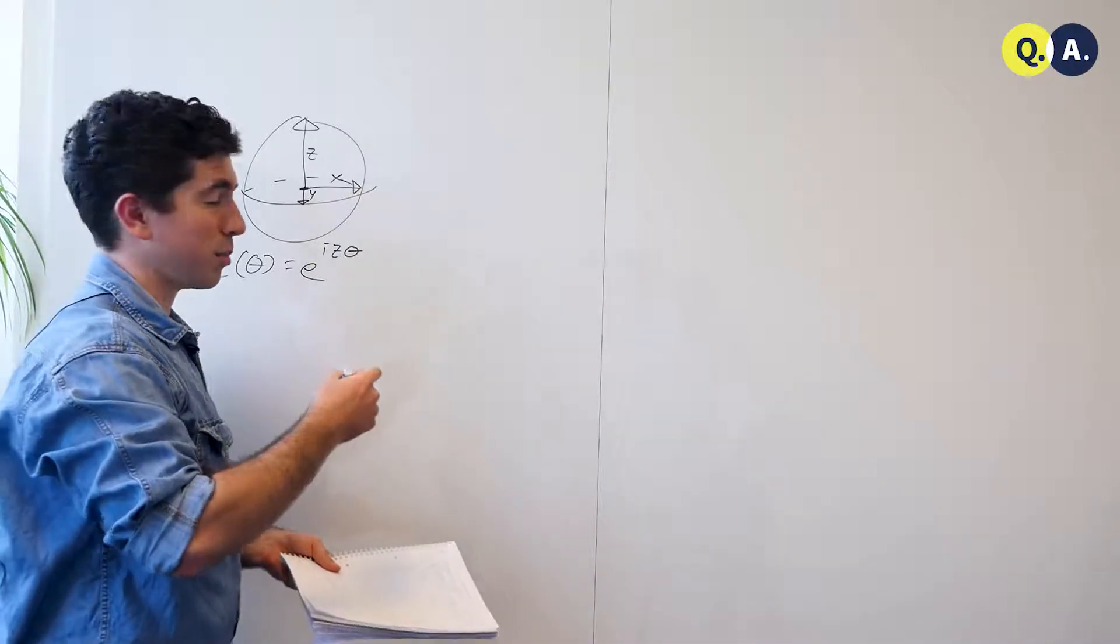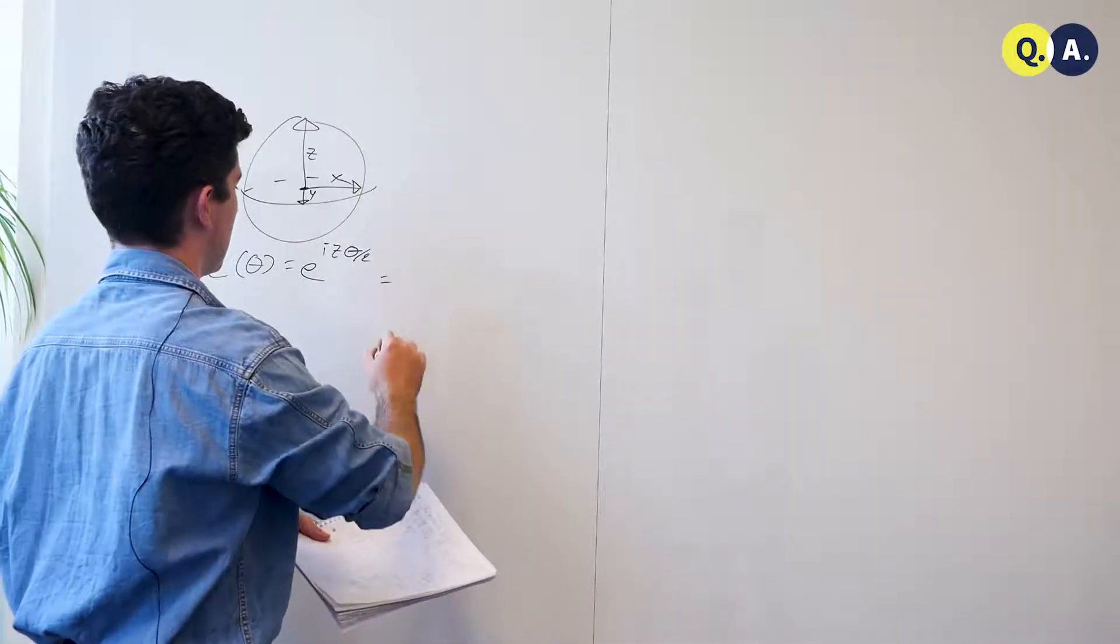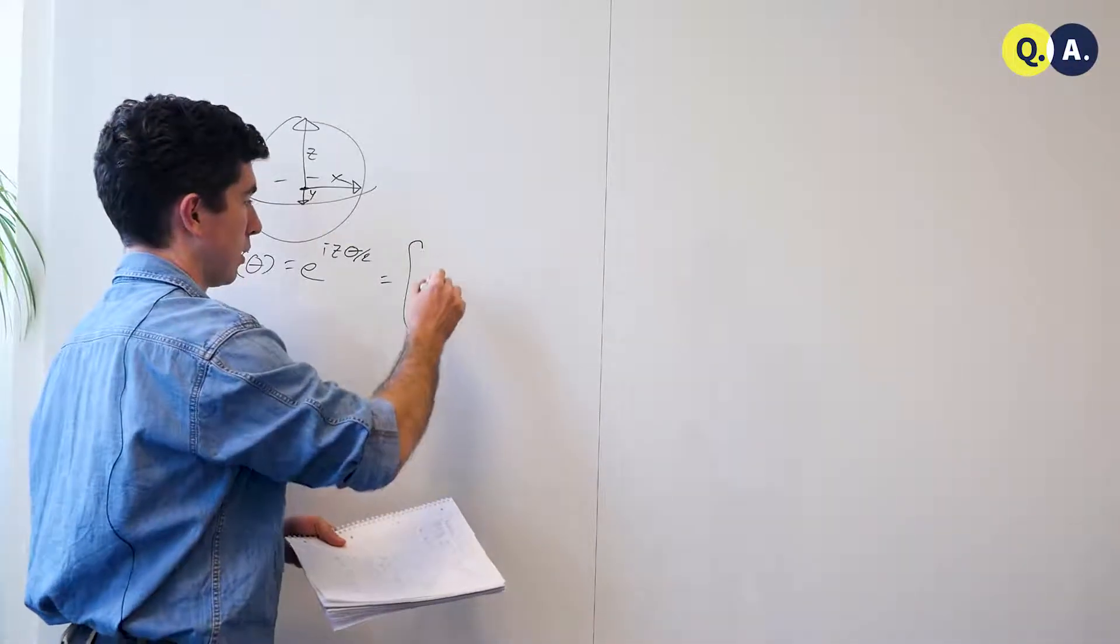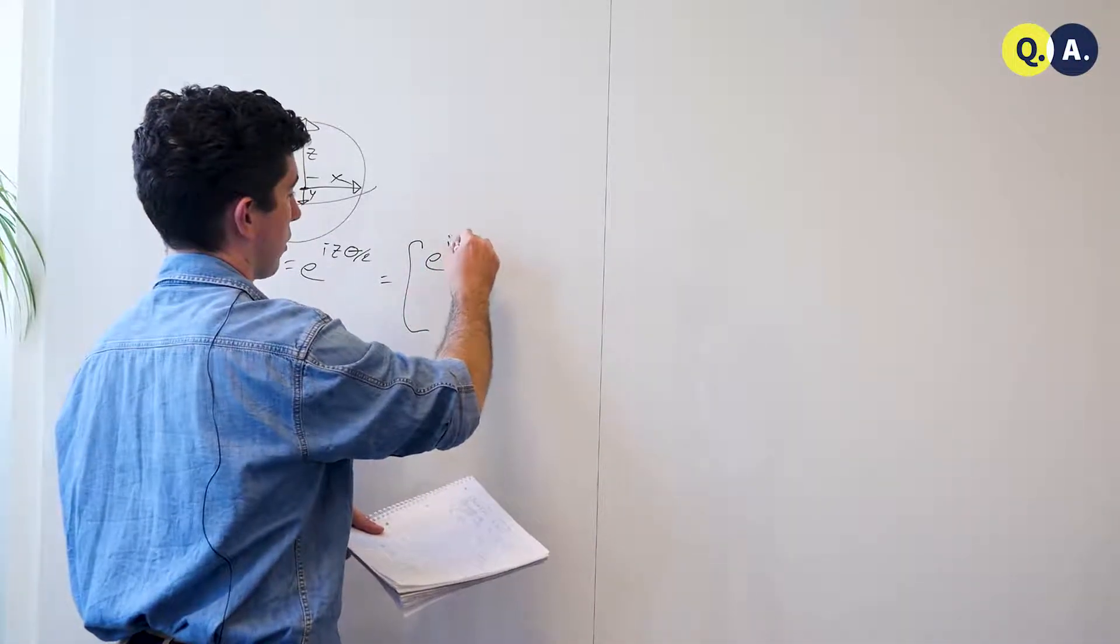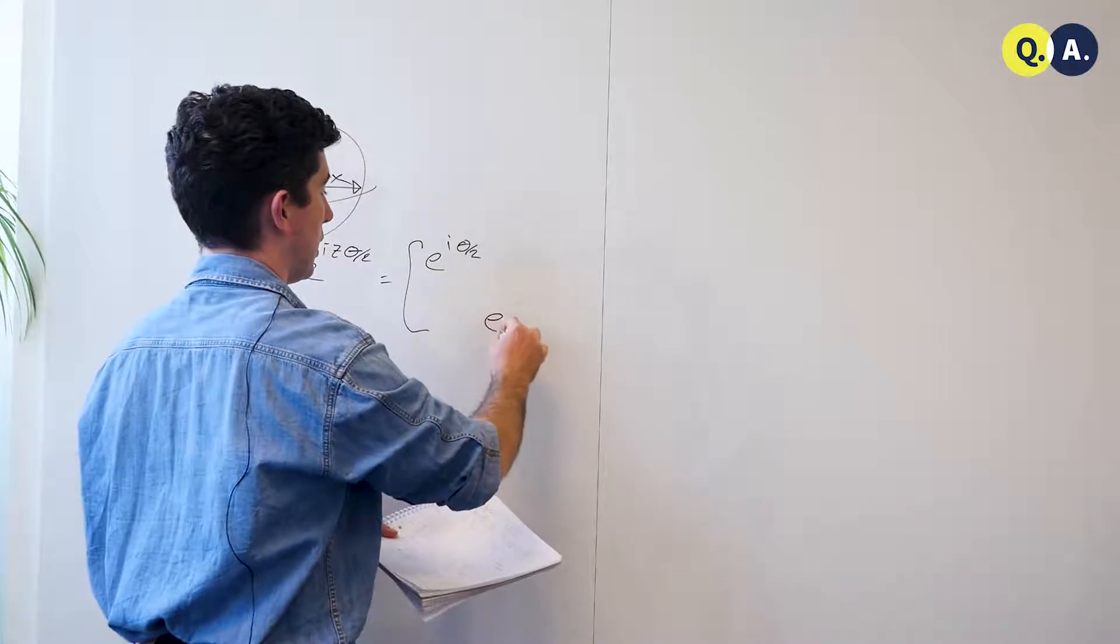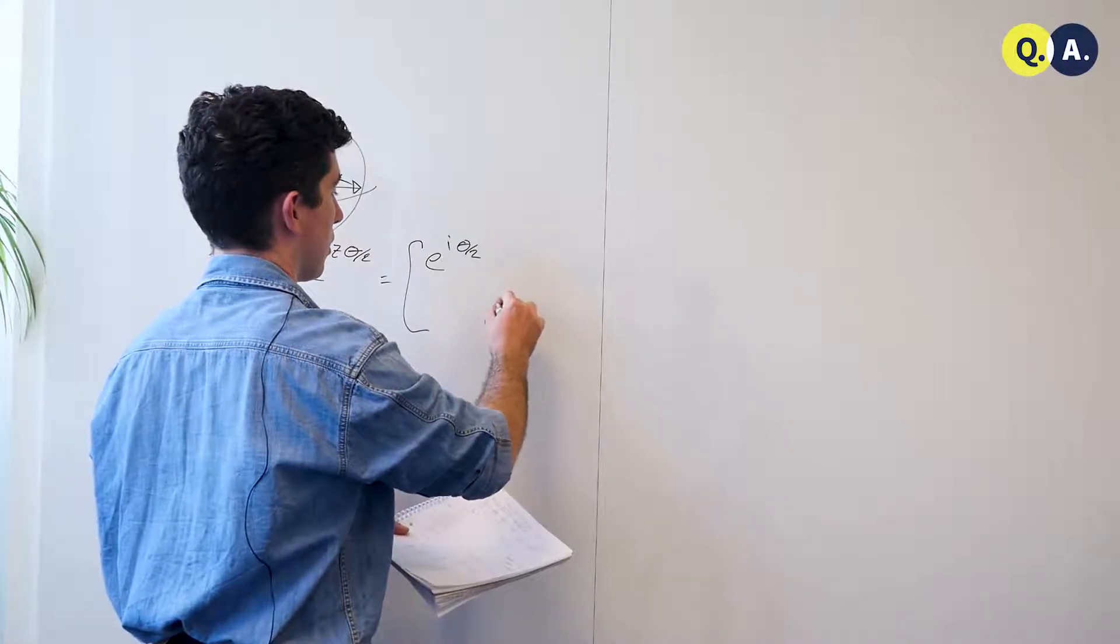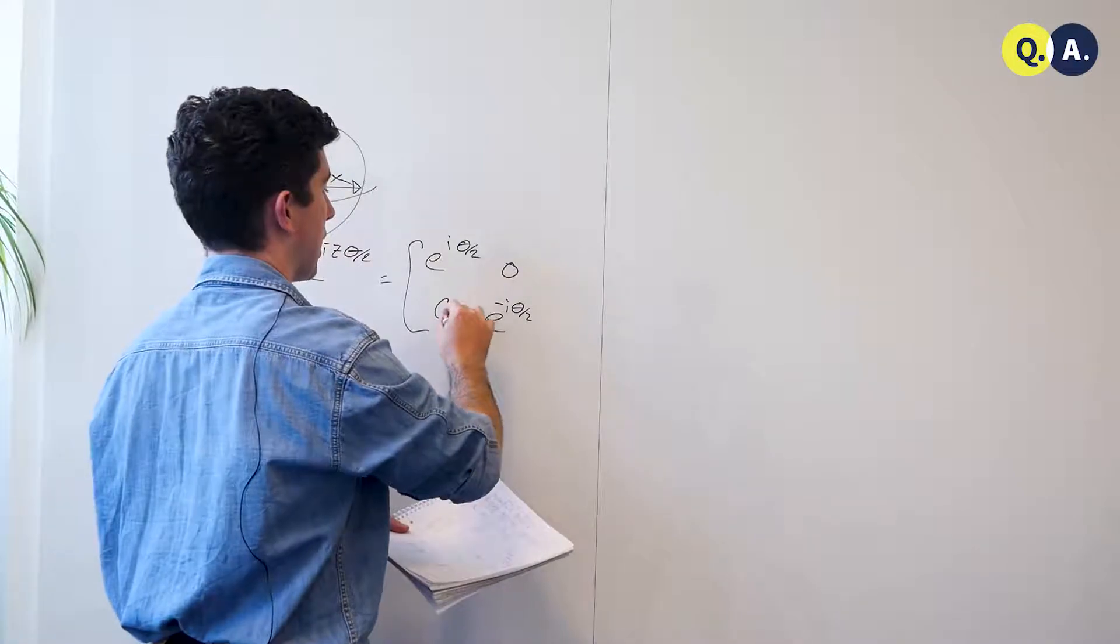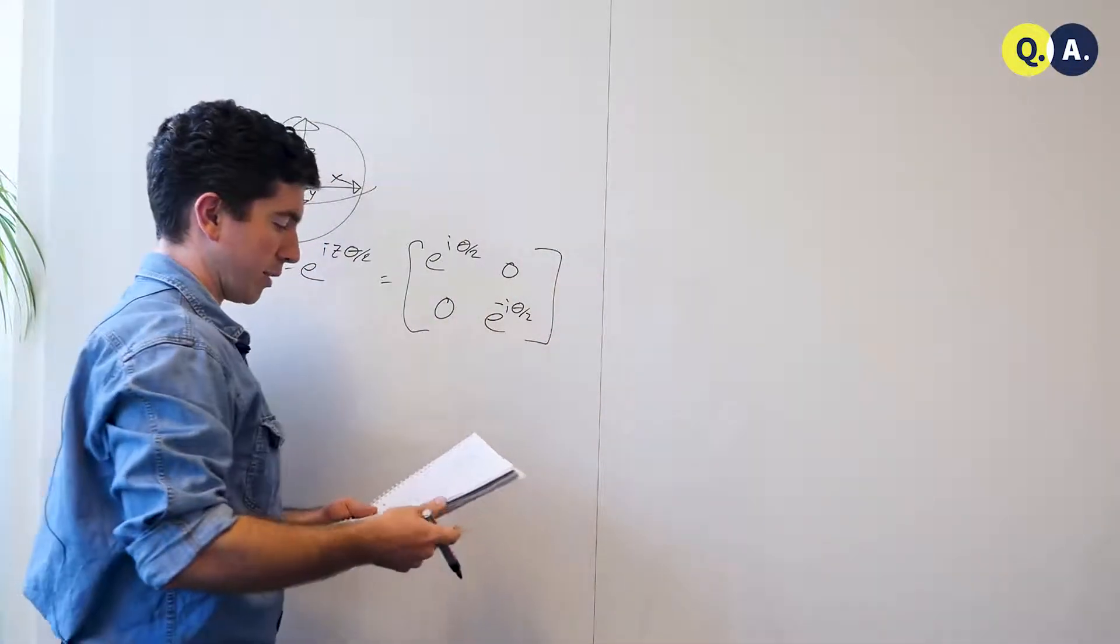But if this doesn't make sense to you, then this is just a diagonal matrix with e to the i theta over 2, and e to the minus i theta over 2 on the diagonal, zeros off-diagonal.